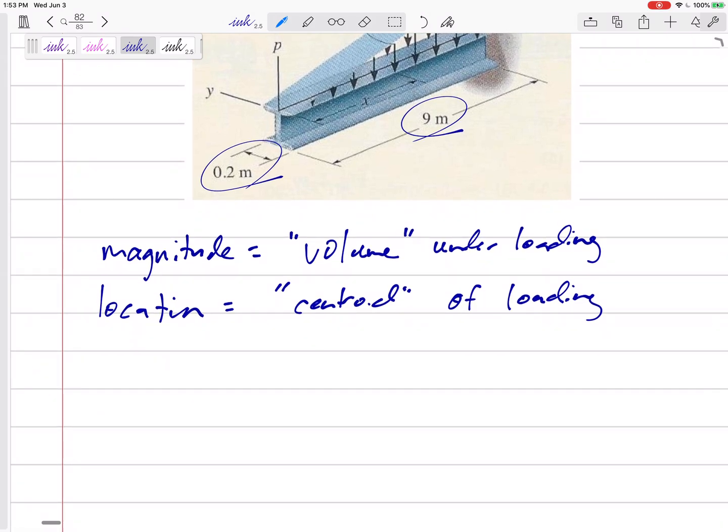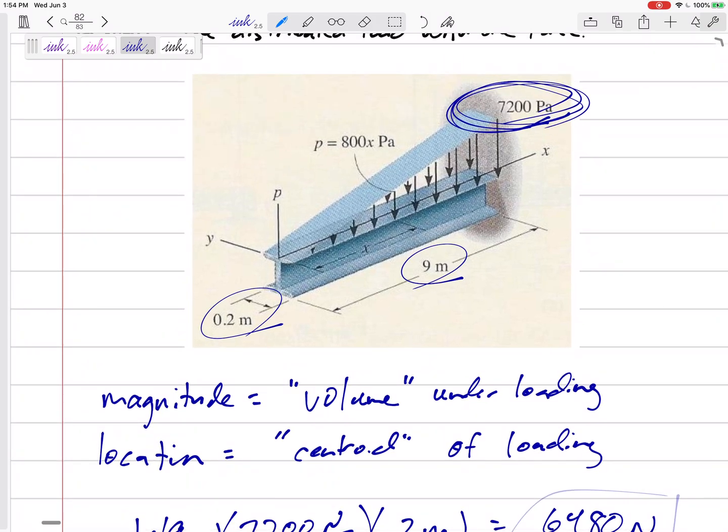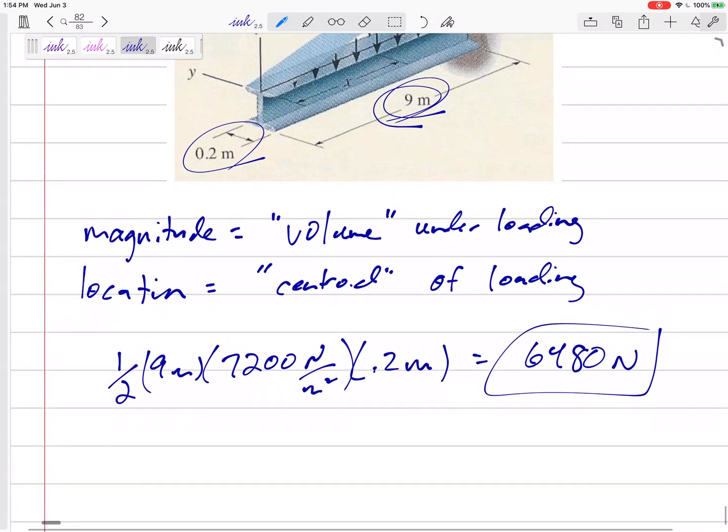So in this case, this triangular 3D shape, its volume would be one half base times height 7200, a Pascal is a Newton per meter squared, times 0.2. It's a uniform 0.2 right here. So there we would get newtons, 6480 newtons. And it would be the centroid of a uniform triangle would be two thirds. It'd be right at the center line and it would be two thirds of this nine. So it'd be six meters from there, three meters from the back. All right. So 3D, it's volume under loading location of the centroid.